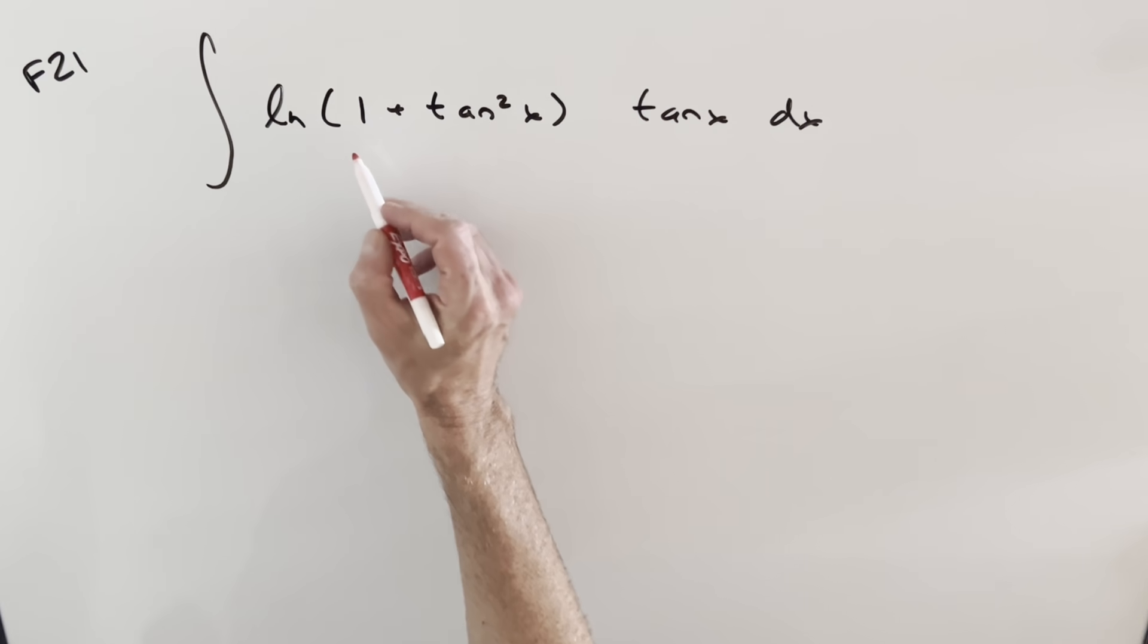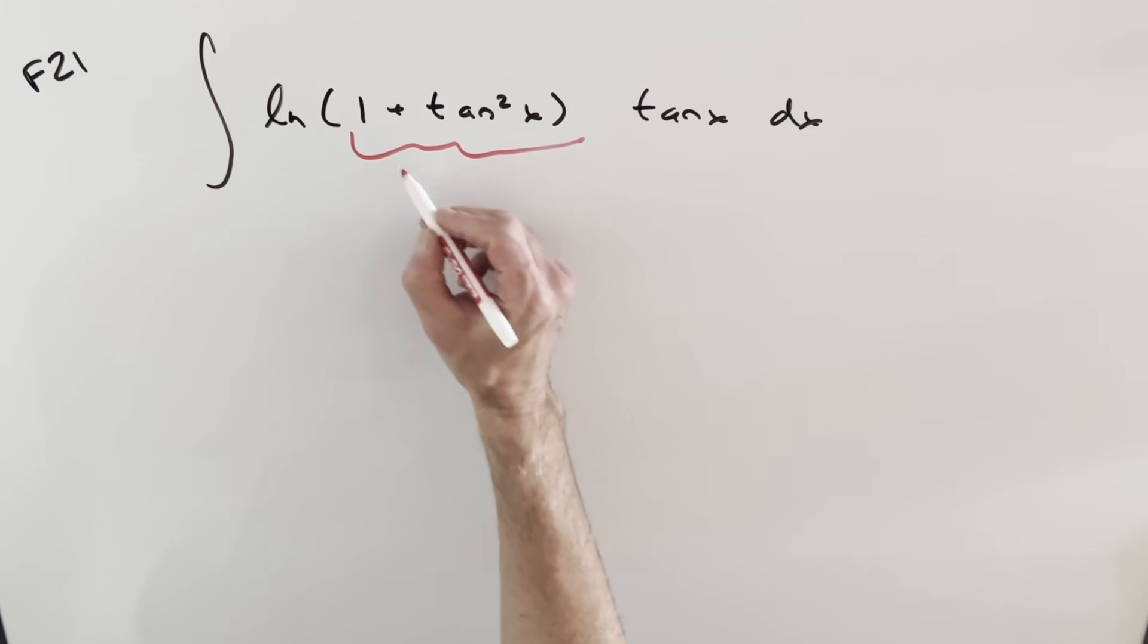I think what we want to do first though, we have an identity for this part right here. This is going to be the same thing as secant squared x.